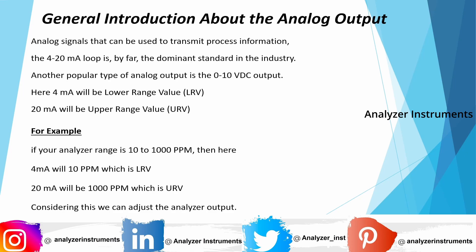Before getting into the video on how to adjust analog output, here is a general introduction about analog output. Analog output is used to transmit process information from our analyzer to DCS. There are two types of analog output: in most cases we use 4 to 20 milliamps, and in some cases we use 0 to 10 volt DC. For example, looking at the 4 to 20 milliamps range.